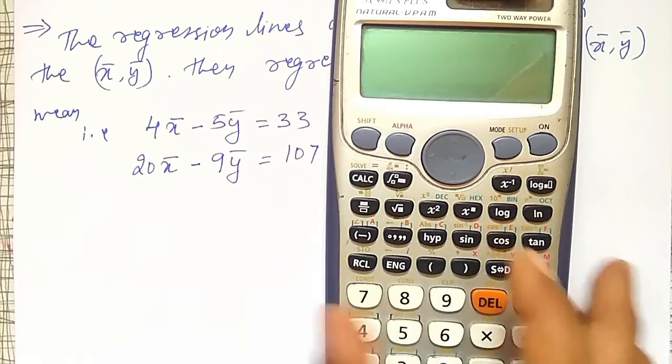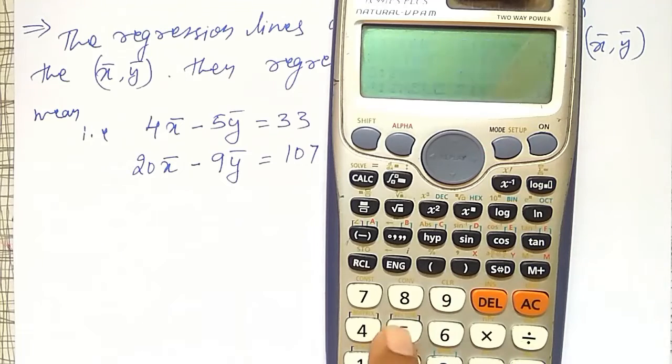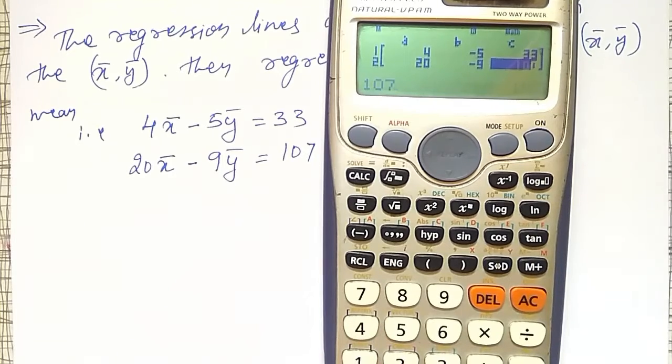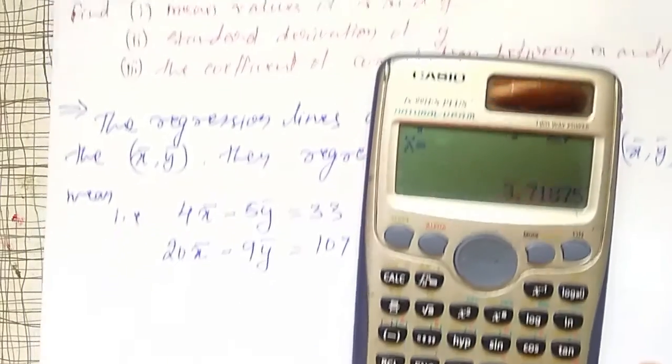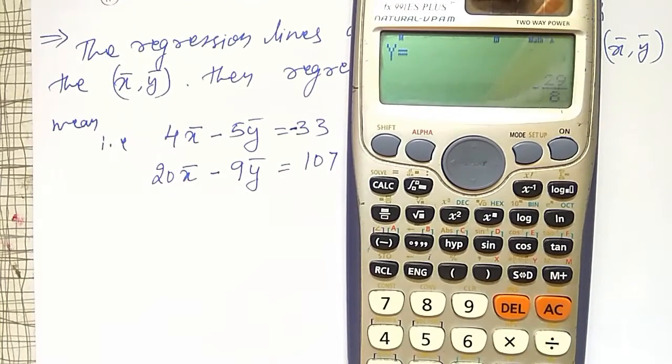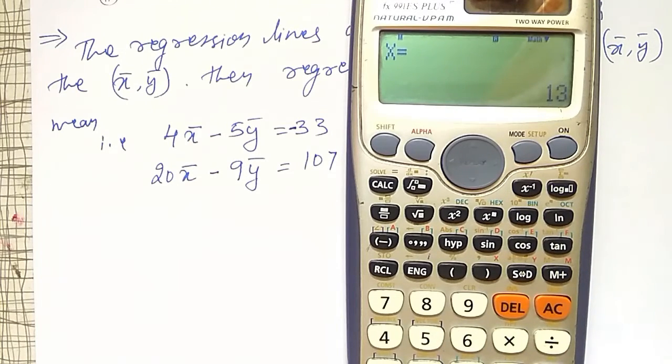How to solve them? I will go to the calculator directly, in equation mode, option number 5, first option I will select. Then 4 minus 5, 33, and second equation is 20 minus 9, 107, equal to. Here one mistake I have done - plus 33 is there. If I shift to other side it will become minus 33. Just make that correction here.